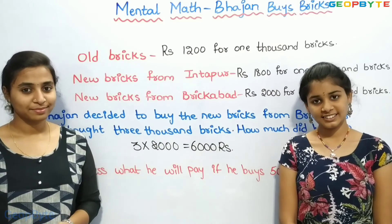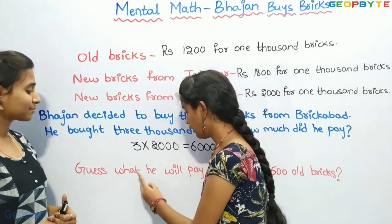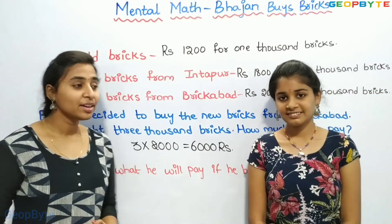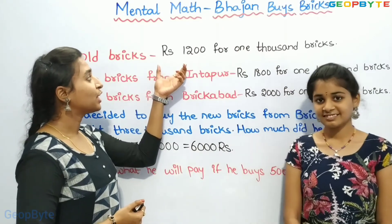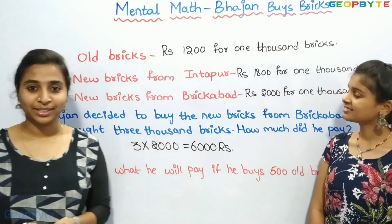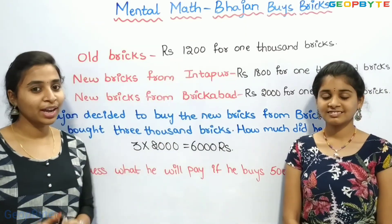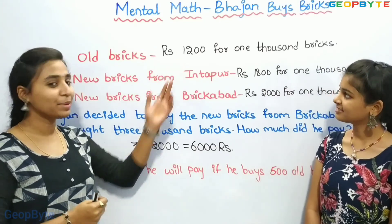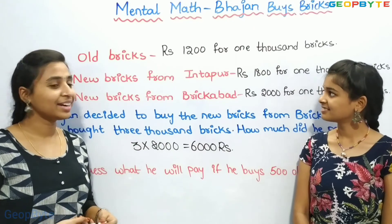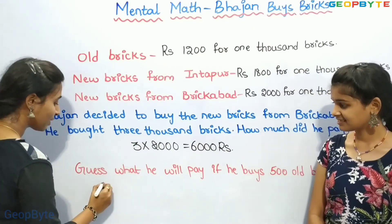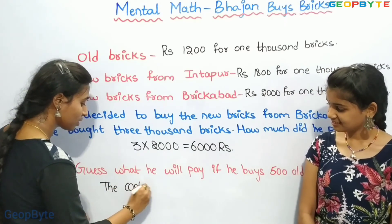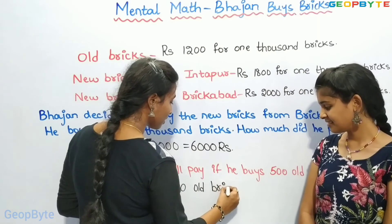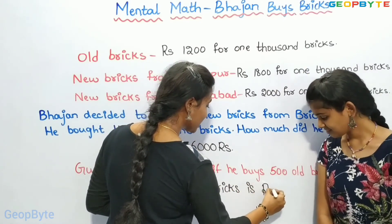Now let us see the next question. The cost of old bricks is Rs. 1,200 for 1,000 bricks. For 500 bricks — that is half of 1,000 bricks — the cost also becomes half. What is half of 1,200? It is 600. So the cost of 500 old bricks is Rs. 600.